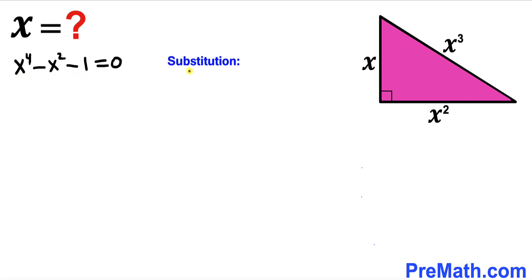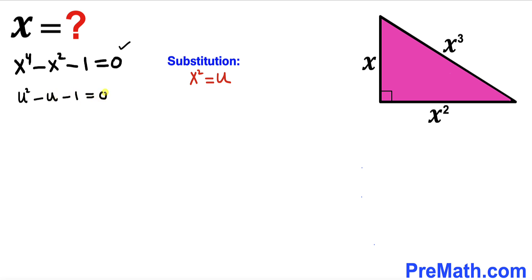Now I'm going to make a substitution: let u equal x squared, so x to the power 4 becomes u squared. Therefore our equation becomes u squared minus u minus 1 equals 0.